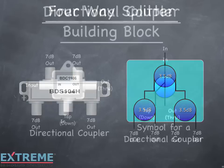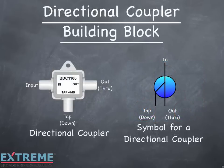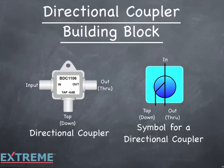The directional coupler is another basic building block of other splitting devices. When combined with two-way splitters, they make up all other splitting devices. On the left we're showing a directional coupler, and on the right is the simple equivalent with the input port, tap or down port, and out or through port.